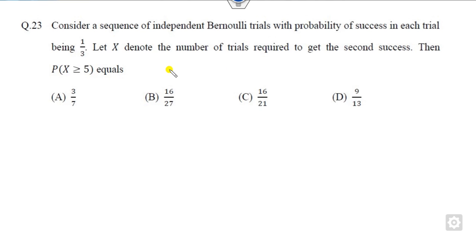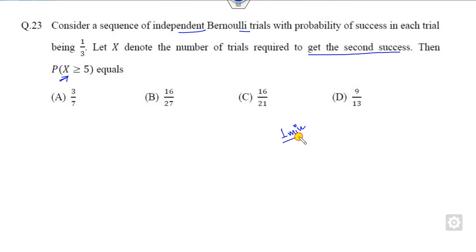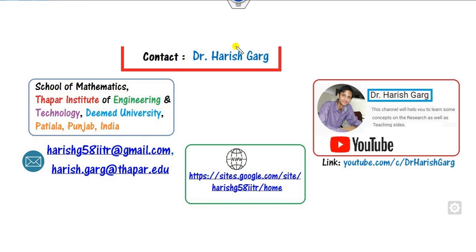Question number 23 is related to some distribution functions where you are given a requirement on the second success and then you have to find the probability. Our target is to solve these two questions within one minute each. I am Dr. Agar, working in the school of mathematics. You can follow this link for finding more previous year papers.